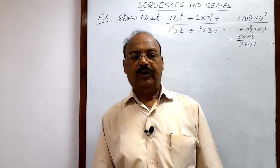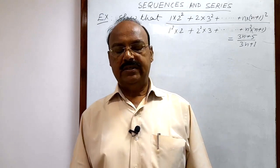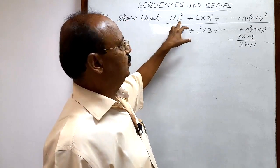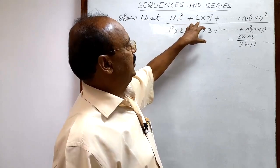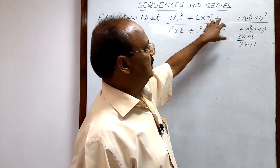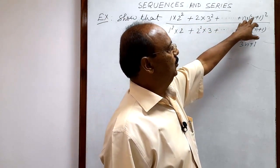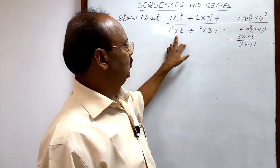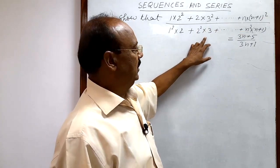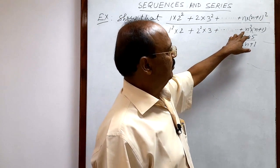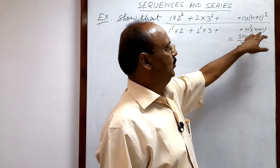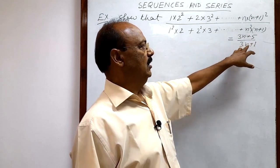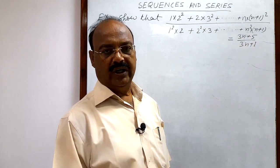Here we will discuss a very important question from the topic sequence and series. The question is: show that 1·2² + 2·3² + ... + n·(n+1)² all over 1²·2 + 2²·3 + ... + n²·(n+1) is equal to (3n+5)/(3n+1).